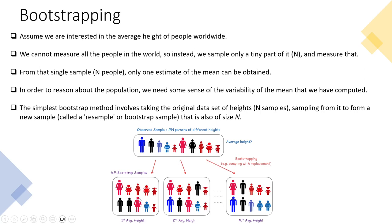Some elements appear in a bootstrap sample multiple times while others may not appear at all. By creating many such samples and computing statistics on each, you come up with a more robust statistic. For example, instead of calculating the mean directly, if you bootstrap and create many resampled datasets and take the mean of each, you can observe the variation of the average — that is the idea behind bootstrapping.